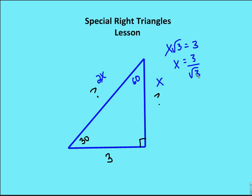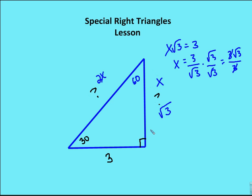I need to rationalize the denominator, so I multiply both numerator and denominator by root 3, and I end up with 3-root 3 over 3. Both 3s reduce, and I'm left with x equals root 3. The side opposite the 90-degree angle is 2 times x, so my strategy is to find the side opposite the 30-degree angle first, and 2x becomes 2-root 3.